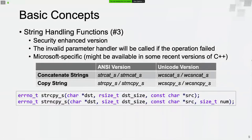The security-enhanced string handling functions are implemented by Microsoft and may only be available on Windows. The invalid parameter handler will be called if the operation fails. These functions have more parameters — the second parameter specifies the size of the destination buffer, which is used to ensure the destination buffer will not be overflowed.